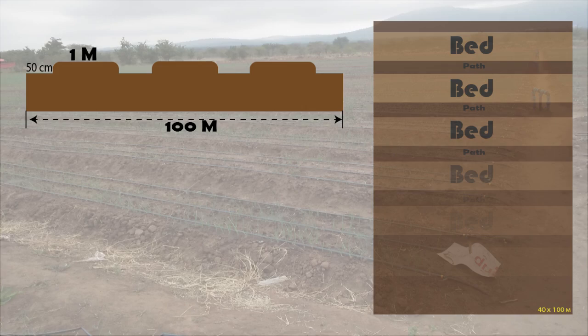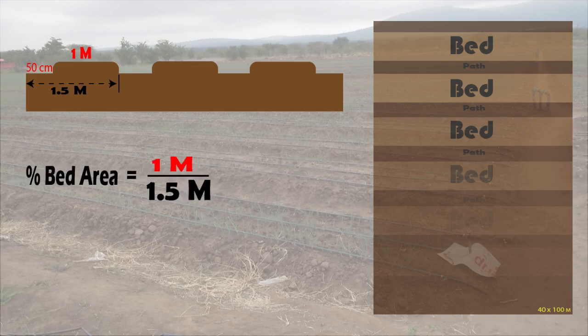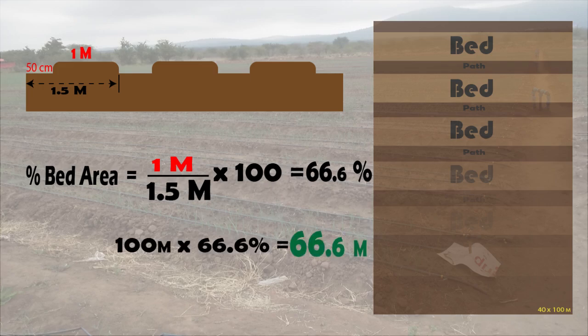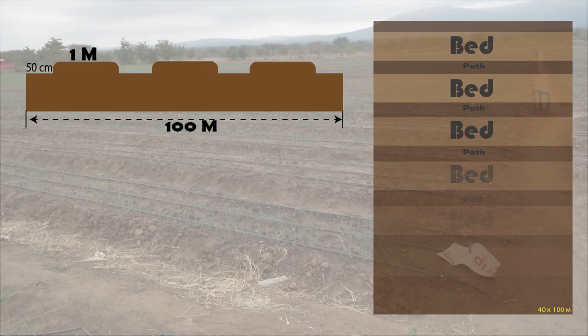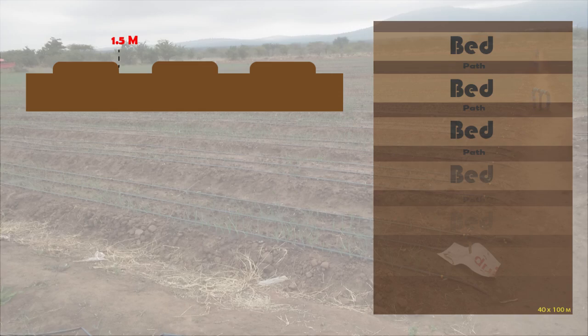Another more intuitive approach is by first estimating the percentage of the unit that is utilized by the bed alone. By doing this, you get 66.7% of the unit is under bed. Since the pattern is uniform, we assume that 66.7% of the total length of 100 meters is effectively under beds only — that gives us 66 meters under bed, which still translates to 66 beds.